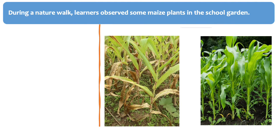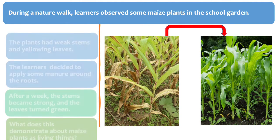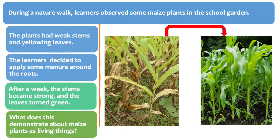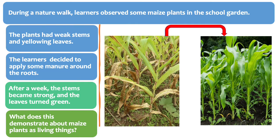During a nature walk, learners observed some maize plants in the school garden. The plants had weak stems and yellowing leaves. The learners decided to apply some manure around the roots. After a week, the stems became strong and the leaves turned green.